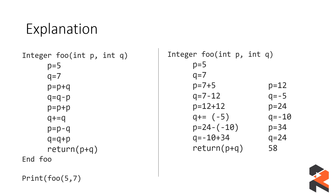The next line is q += q, which is syntactic sugar for q = q + q. Sometimes things are written this way just to confuse you. Since q is -5, the updated value of q = -5 + (-5) = -10.